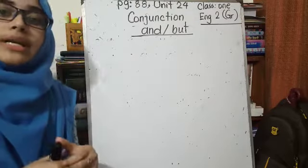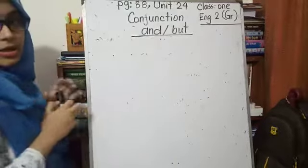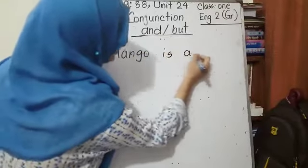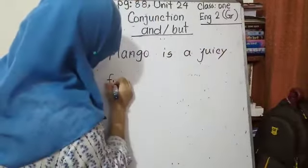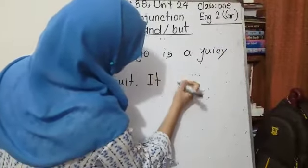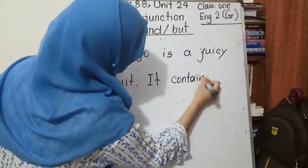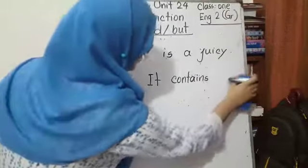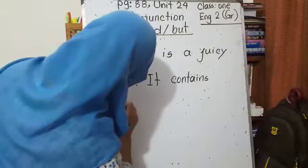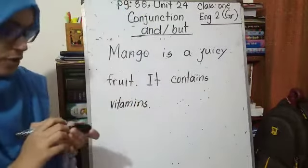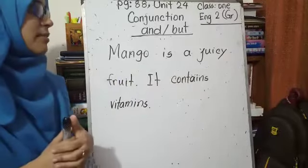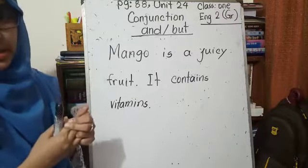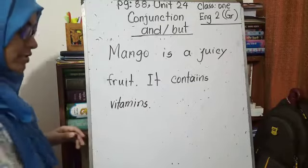'But' is used to connect two statements that express opposite ideas. First, we have to understand the meaning — what does the statement say. We will go for an example using 'and'. Mango is a juicy fruit. It contains vitamins. Every fruit contains vitamins, right? Mango is a juicy fruit and it contains vitamins. Because those are positive qualities, they are saying about the mango.